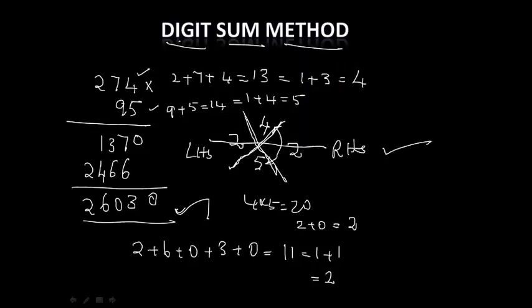So this can be speeded up by adding another rule that is called digit sum method plus cast out 9. See for example let us take 813 multiplied by 94.